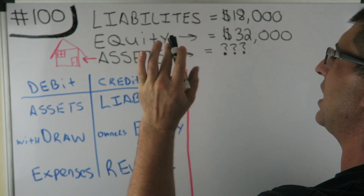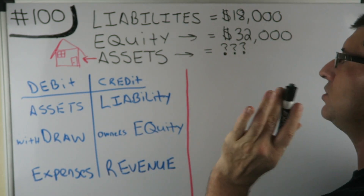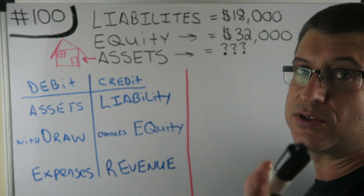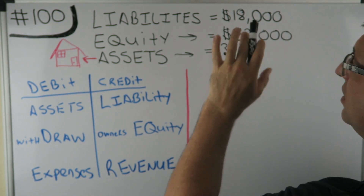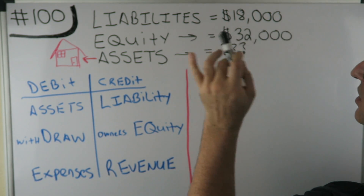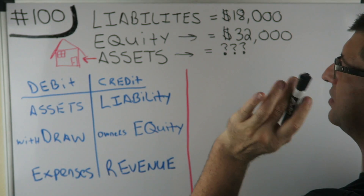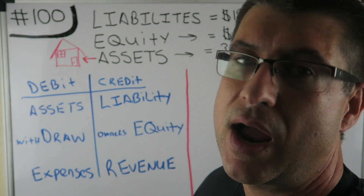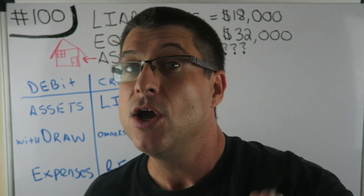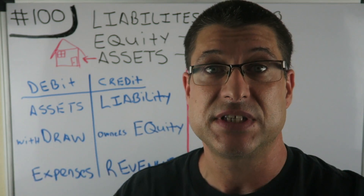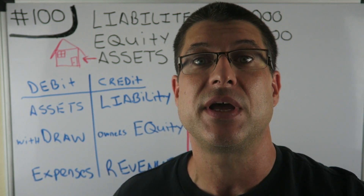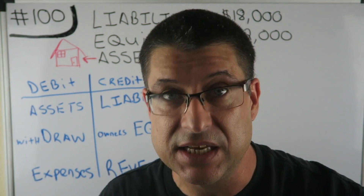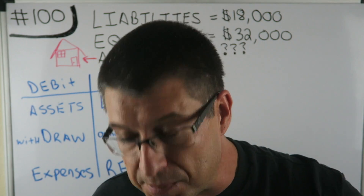So anyways — liabilities $18,000, equity $32,000. What are the assets? You might see your first quizzes are coming up, your first tests are coming up, and you're like, I have no idea.